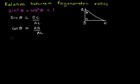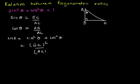On the left side of the identity, I have sin²θ + cos²θ. Sin²θ is BC whole squared over AC squared, which I can also write as (BC)² over (AC)².